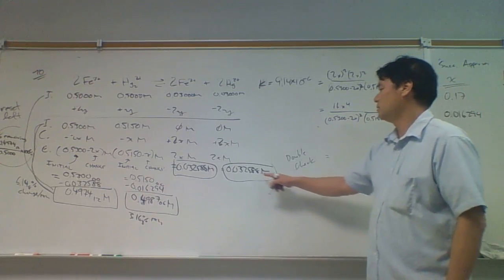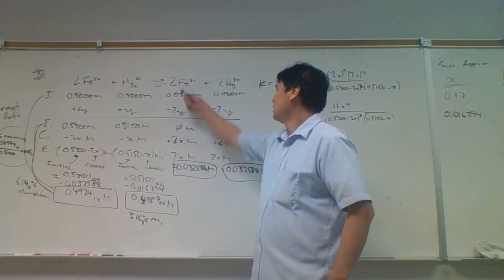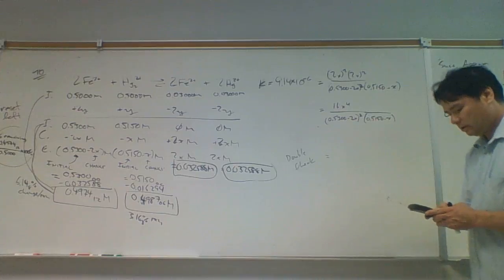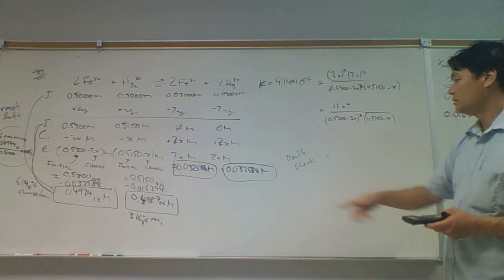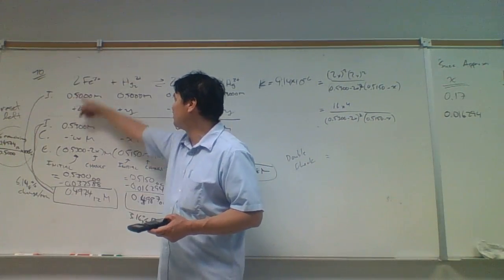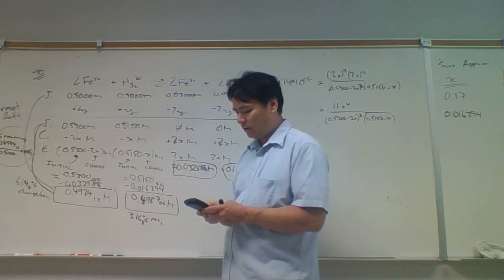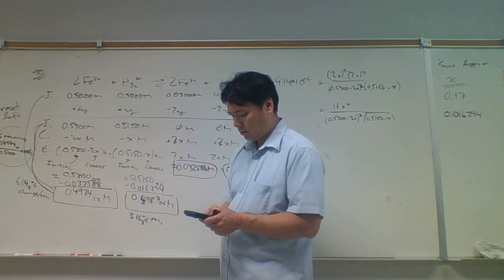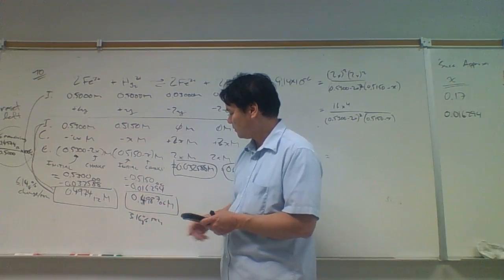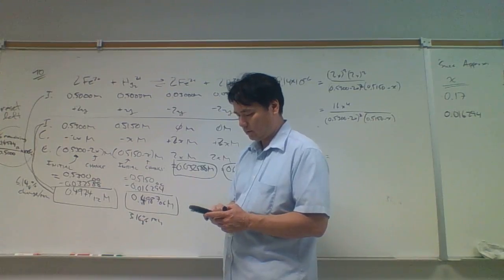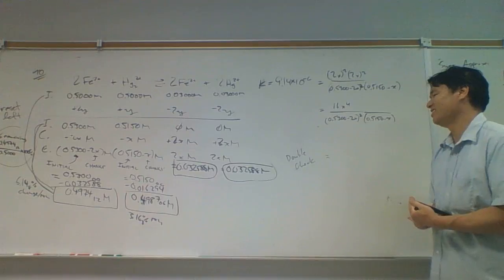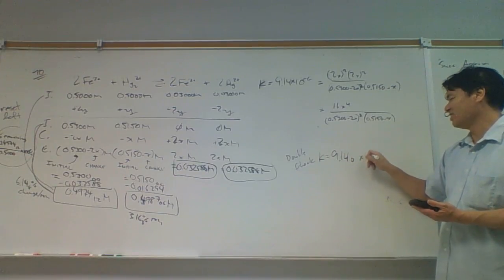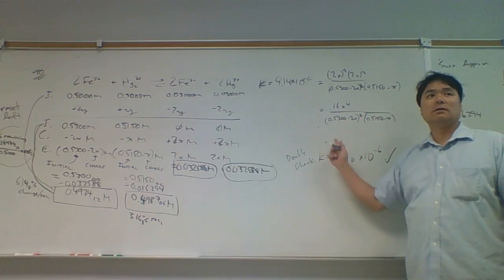Is there a way to double-check these equilibrium concentrations? We can plug them into the K expression — the ratio should match. This is why I carry extra digits, to avoid rounding errors. To double-check: 0.032588 to the fourth, divided by 0.4974² times 0.498706. It comes out to 9.140 × 10⁻⁶ — they match. This is the correct ratio.